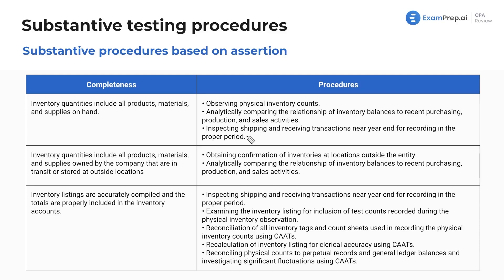Inspecting shipping and receiving transactions near year-end for recording in the proper period. Next, inventory quantities include all products, materials, and supplies owned by the company that are in transit or stored at outside locations. For a large company with multiple facilities, making sure everything's properly included — so you're going to obtain confirmation of inventories at locations outside the entity, and analytically compare the relationship of inventory balances to recent purchasing, production, and sales.